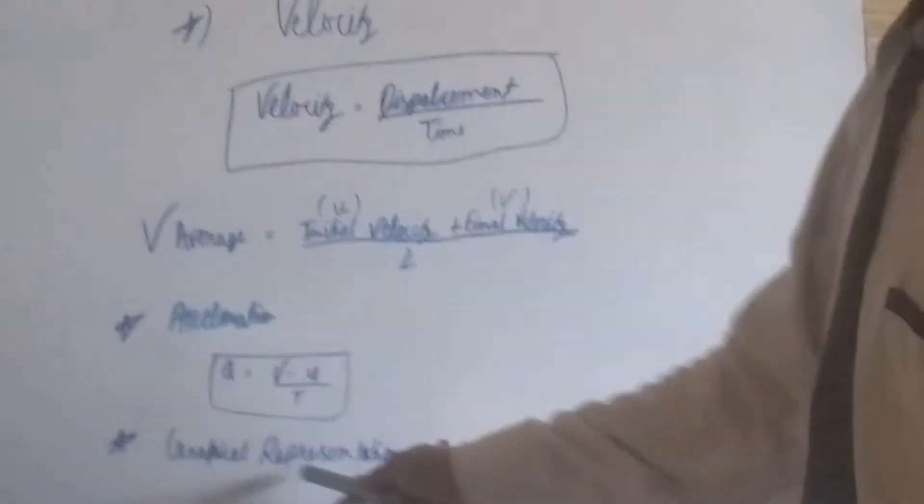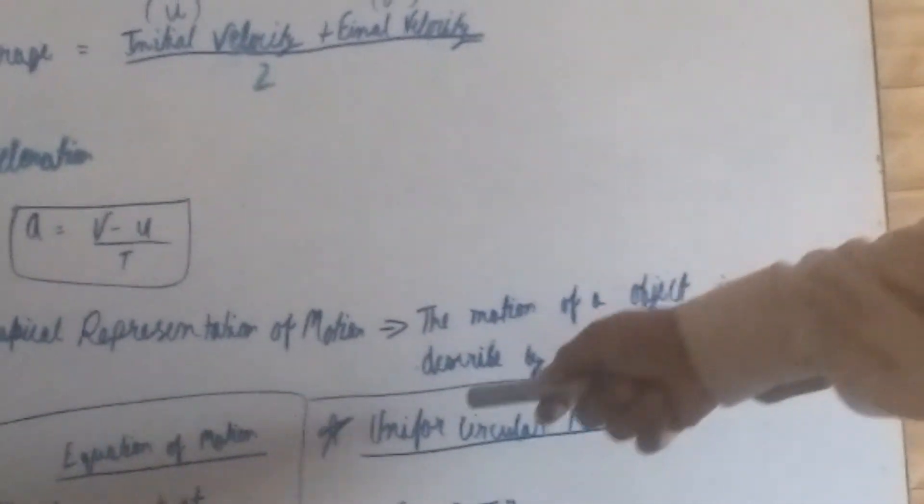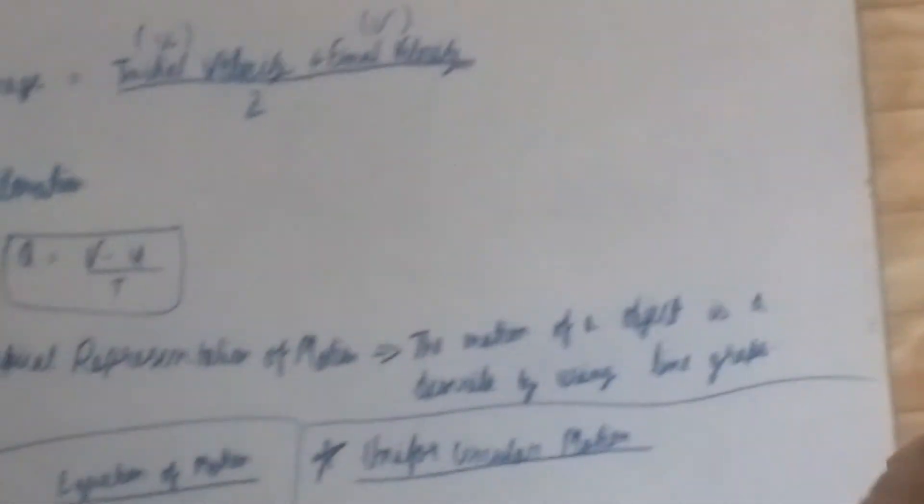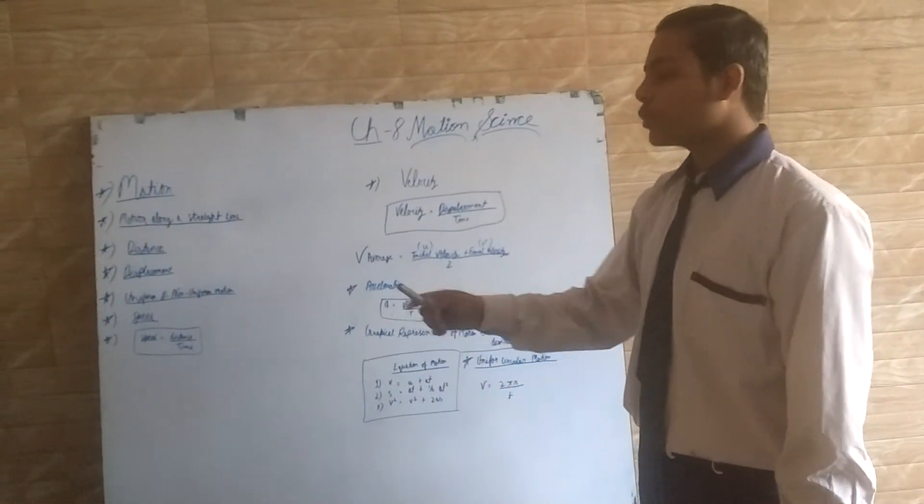Graphical representation of motion: The motion of an object is described by using line graphs. The graph will show that motion.